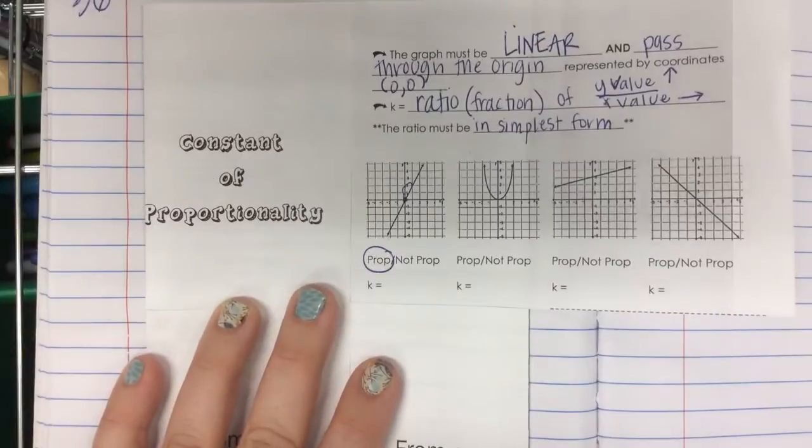So what's my constant of proportionality? Negative one over one. Because I'm going down one space. Down one over one. I want my bottom, my denominator to be a positive one. Because it needs to be over one.